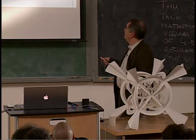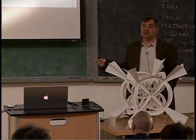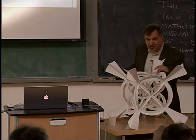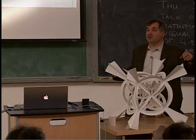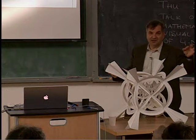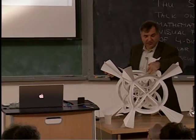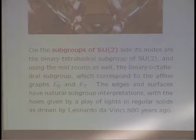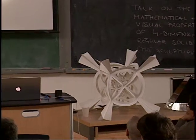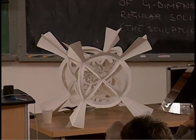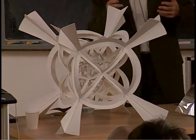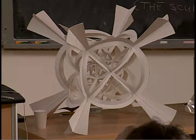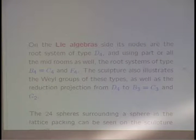And the sculpture represents, if you use the vertices, the binary tetrahedral group — the symmetries of the tetrahedron in 3D. It's not just the vertices; the edges represent special rotations of the tetrahedron which map one vertex into another. The faces as well, and even the holes can be described as a play of lights in the regular solids as drawn by Leonardo da Vinci. I have made an interactive Java machine in which you walk with one point on the sculpture and the tetrahedron shows its structure. This way you get the E6 and E7 as well.